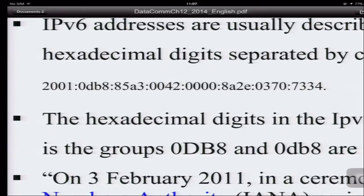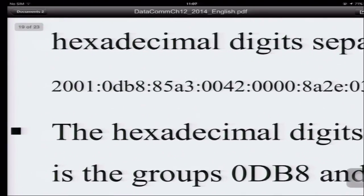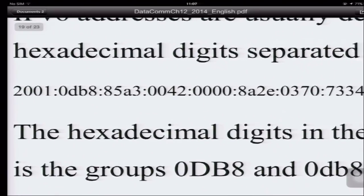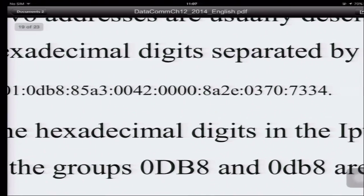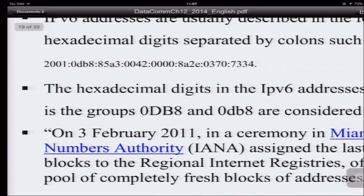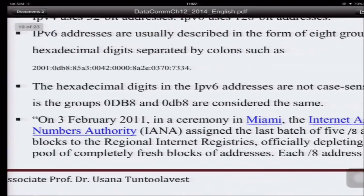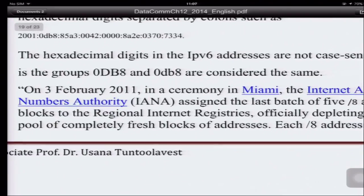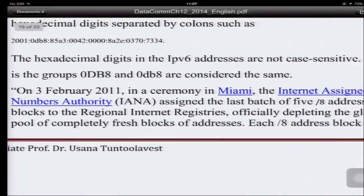You can see the second group is what was just shown — you have the alphabet A up to F in combination with numbers, and you have eight groups of this, so it is quite long. The address is not case sensitive, so capital D or lowercase D is the same — capital DB and lowercase DB are considered identical.